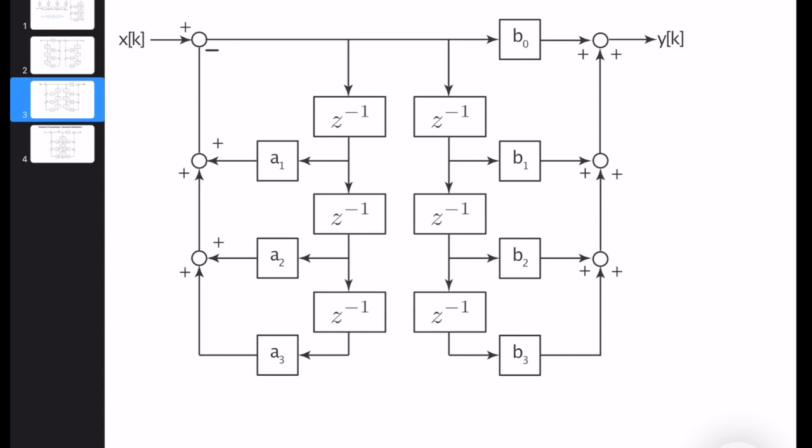If we do that, this is the result. Now, as you can see, we have a better understanding of the block diagram structure, and it will be much easier for us to reduce the delay elements. This is x[k], this is y[k]. Let's assume that this is h[k], an intermediate signal.